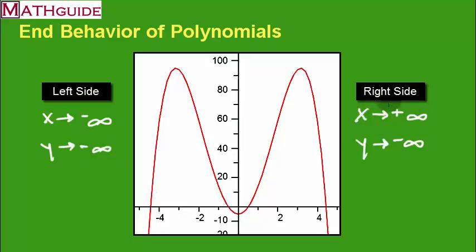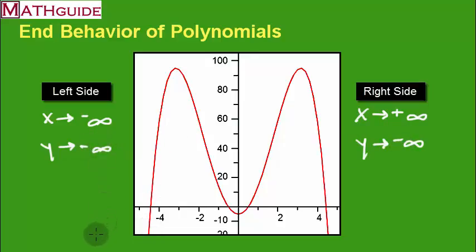So x goes to positive infinity on the right and x always goes to negative infinity on the left — at least for polynomials, that's how it works. When you look at the curve and where it's headed vertically, it's going down forever on the right side — negative infinity — and down forever on the left side — negative infinity again. That has been End Behavior with MathGuide.com. Check out our other lessons, our interactive quizzes, and our instructional videos. Take care.